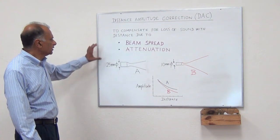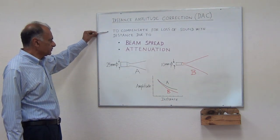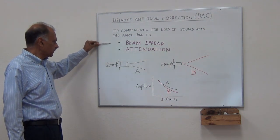With the DAC curve, as shown here, it's to compensate for the loss of sound with distance due to beam spread and attenuation.